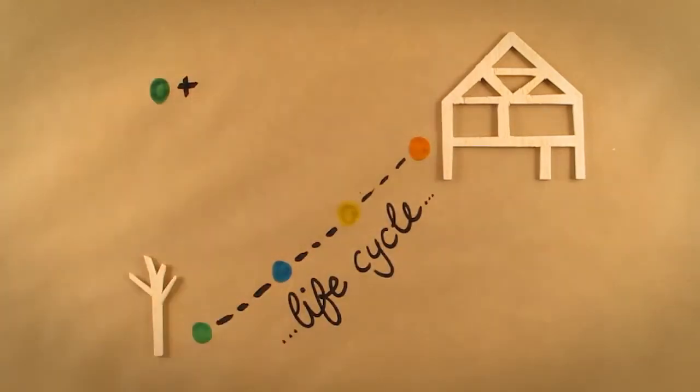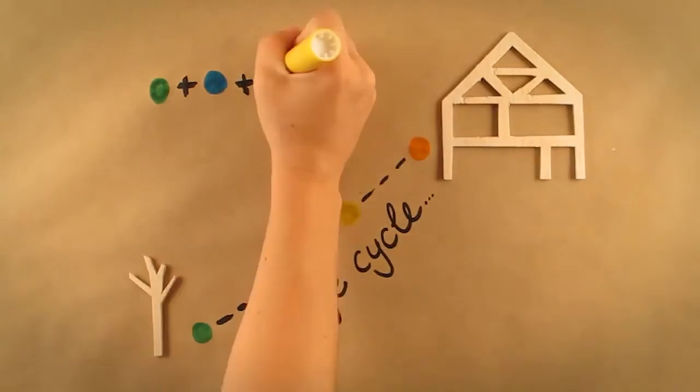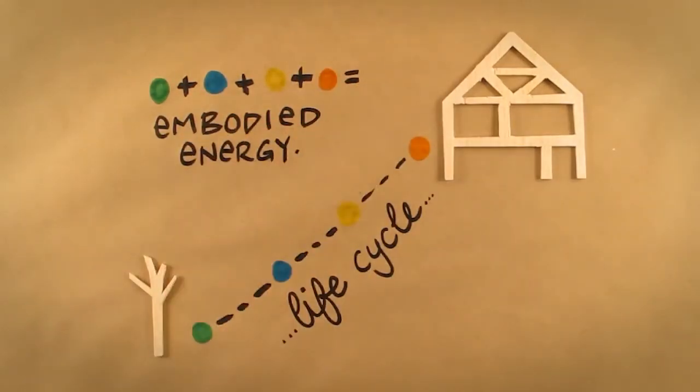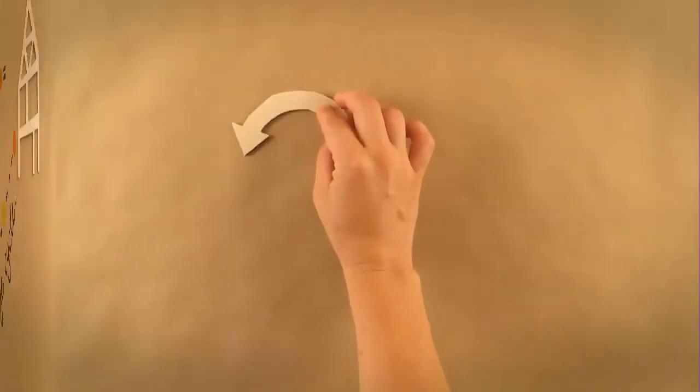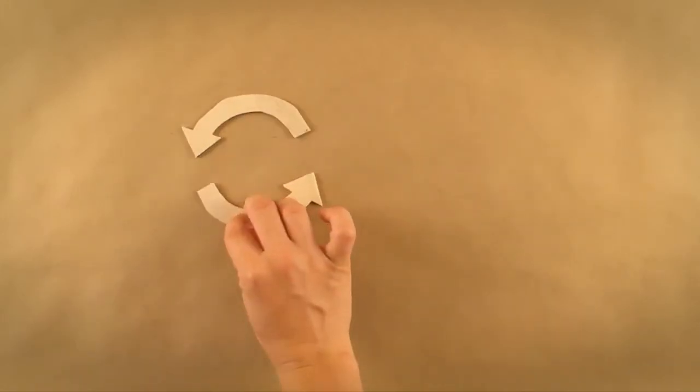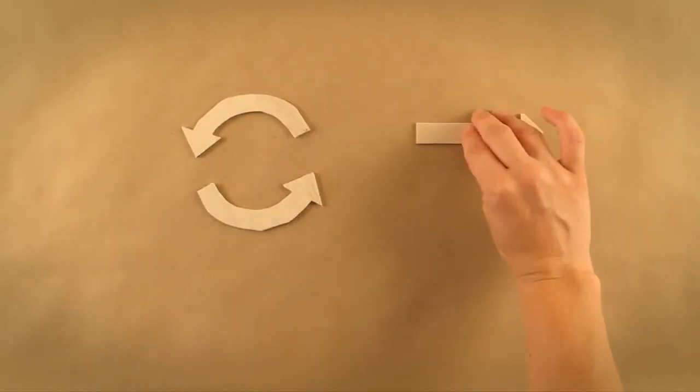The sum of the direct and indirect energies of the individual stages along the value adding chain is the embodied energy. Let's compare the energy used through the life cycle of some renewable and non-renewable natural resources.